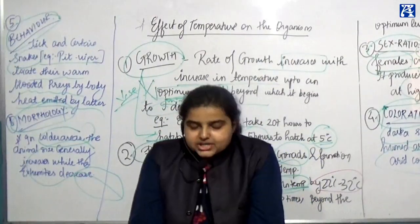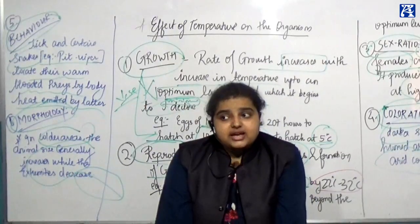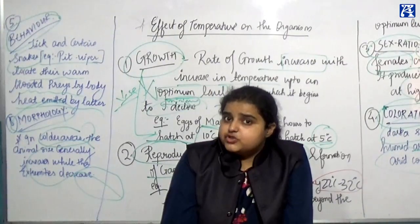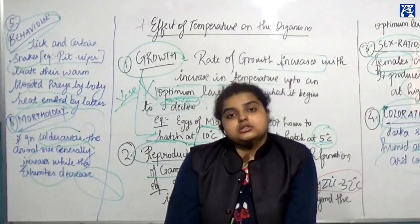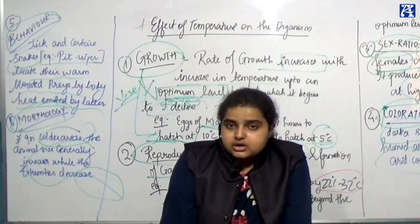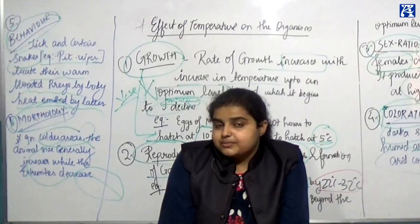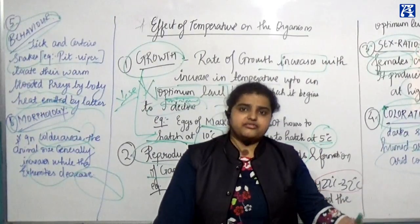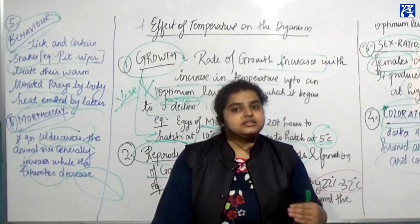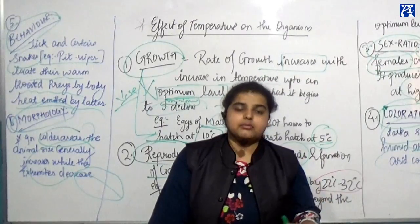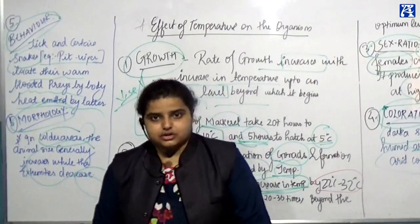Thank you very much. Today we have seen temperature as an abiotic factor, its effects, types of organisms — poikilotherms and homeotherms — and adaptations across wide and narrow temperature ranges. In the next class, we will begin with other abiotic factors: water, light, and soil, and then move on to the adaptation topic.